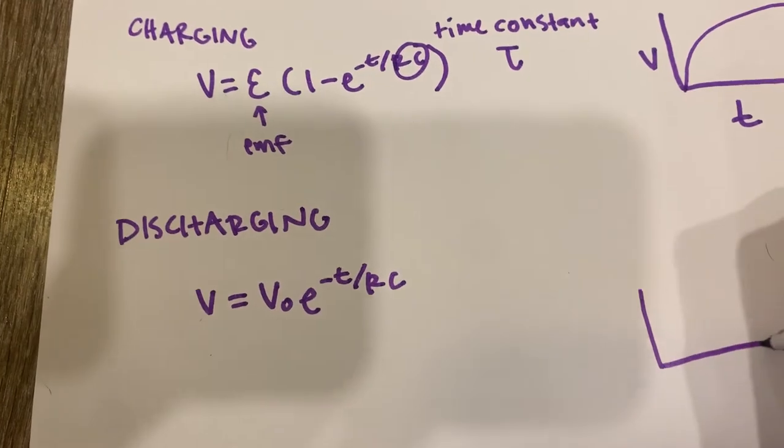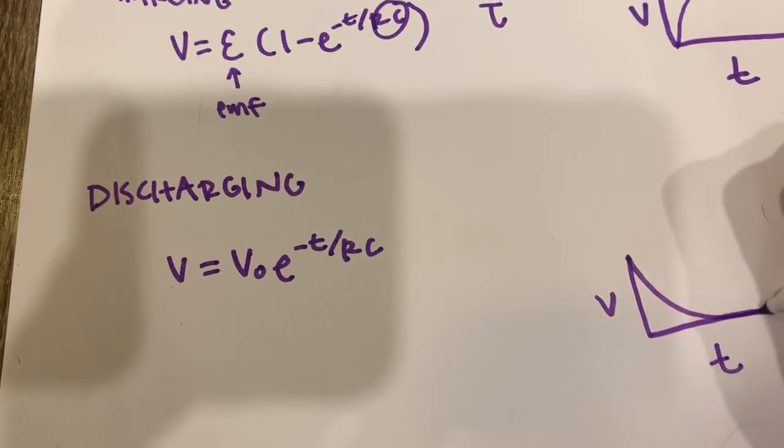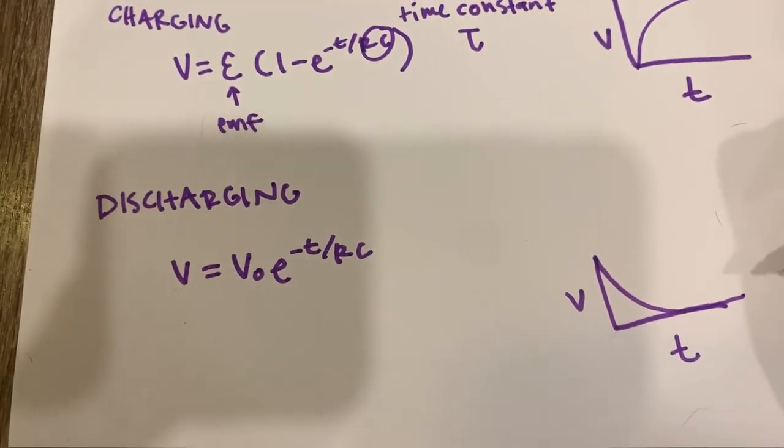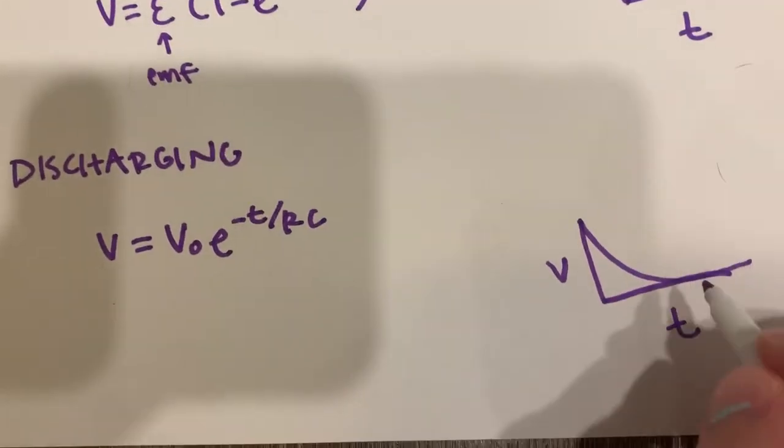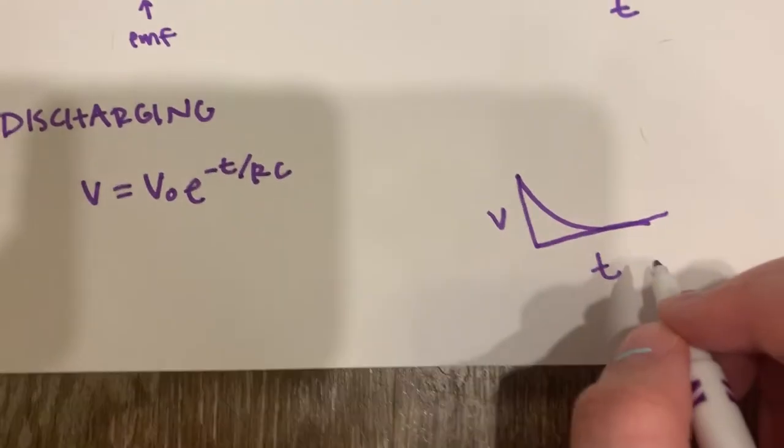And this is what that graph would look like. It's going to come down like that. Okay, I drew that a little off here. It shouldn't actually be hitting zero, but it should be going down and then leveling out like that.